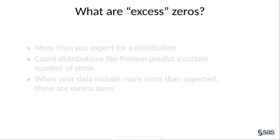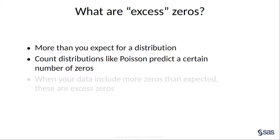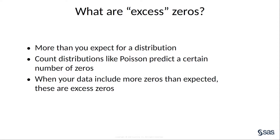To begin with, let's clarify what I mean when I say excess zeros. In this setting, we mean there are more zeros than expected for a distribution. When you model with a distribution such as the Poisson, you predict a certain number of zeros given the values of the predictors in your model. If the observed values of your data have more zeros than the model predicts, you have excess zeros.